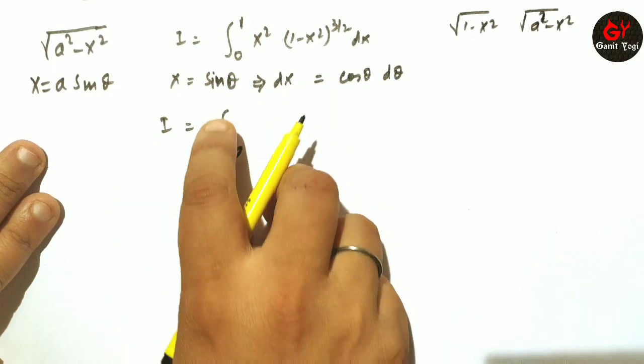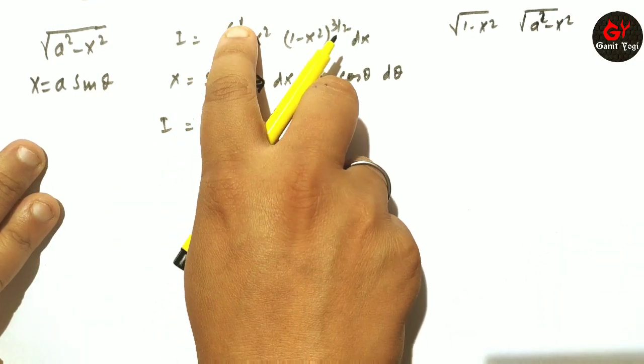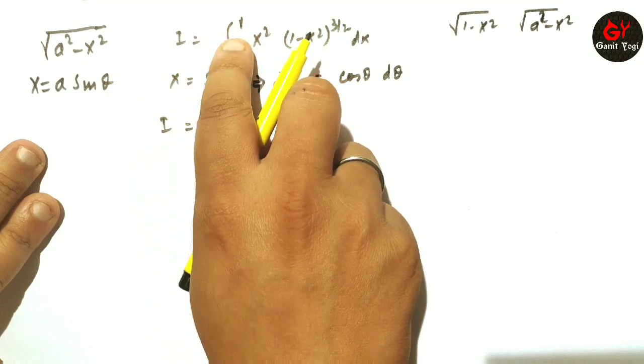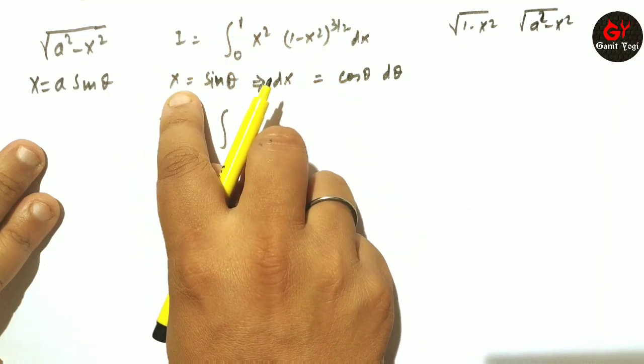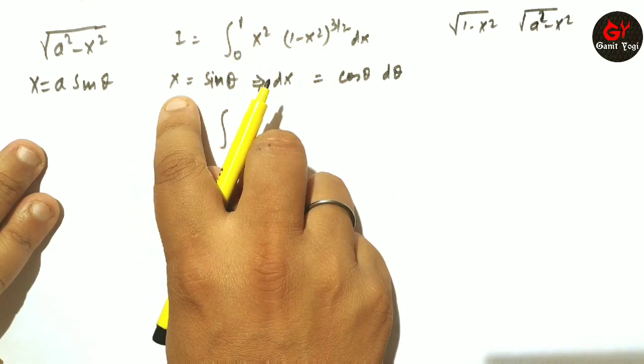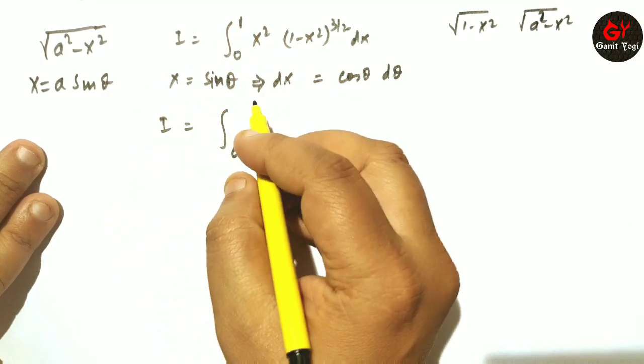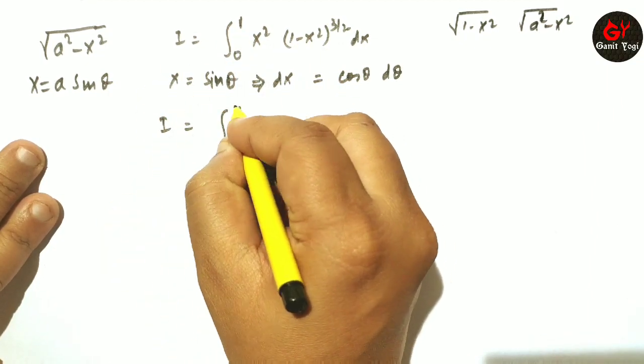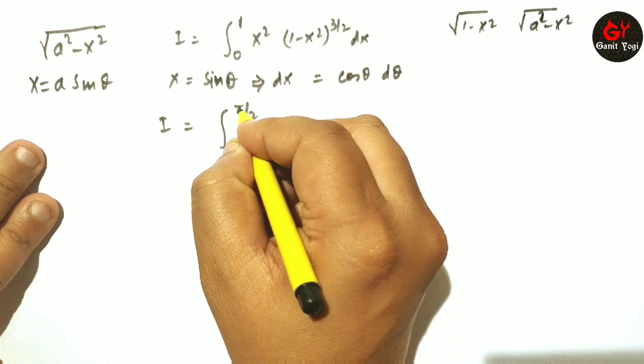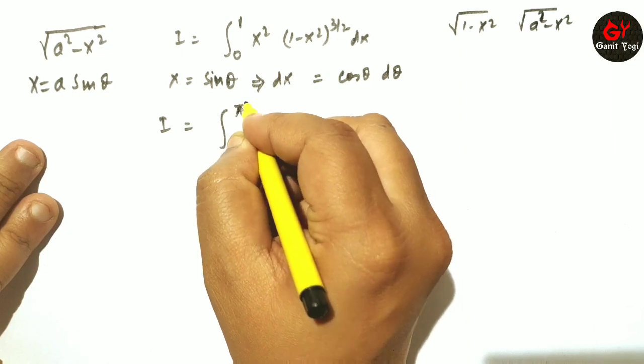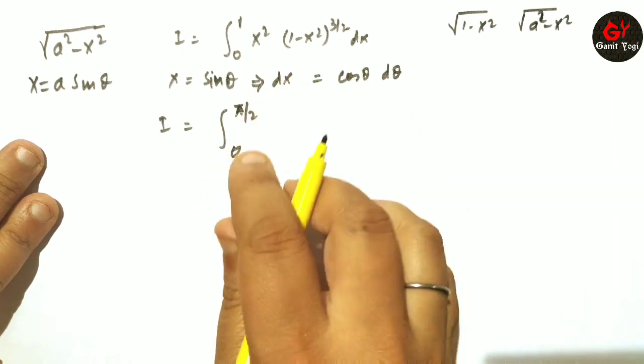When x = 1 (the upper limit), sin⁻¹(1) = π/2. Therefore the new integration limits are 0 to π/2.